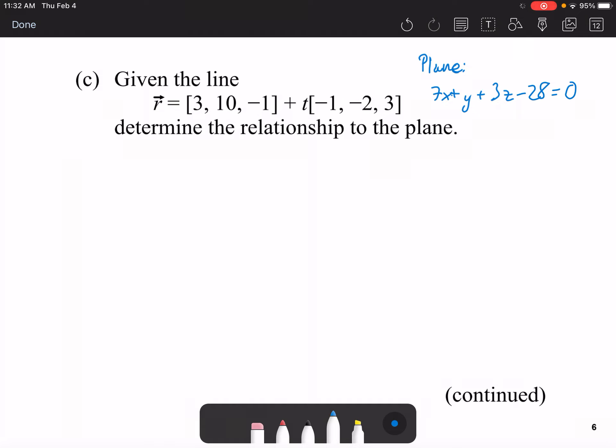So, what you'll notice right now is now this 7, 1, and 3 does not match to the direction in any way. So, now I want to determine if the point 3, 10, and negative 1 lie in the plane. Because if it does, then there's also a possibility that this line may actually fit in the plane itself.